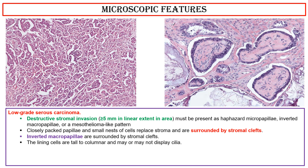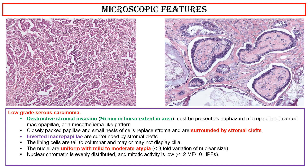The lining cells are tall and columnar, and may or may not display cilia. The nuclei are uniform with mild to moderate atypia, less than 3-fold variation of nuclear size. Nuclear chromatin is evenly distributed, and mitotic activity is low, less than 12 mitotic figures per 10 high-power fields. Atypical mitotic figures are absent, and necrosis is rare.